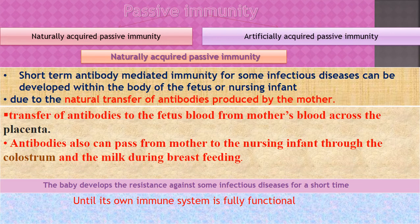Naturally acquired passive immunity is short-term, antibody-mediated immunity for some infectious diseases, which can develop in the body of the fetus or nursing infant. This occurs due to natural transfer of antibodies from the mother — either across the placenta from the mother's blood to the fetus's blood, or through colostrum, the first form of breast milk. The baby develops resistance against some infectious diseases for a short time.